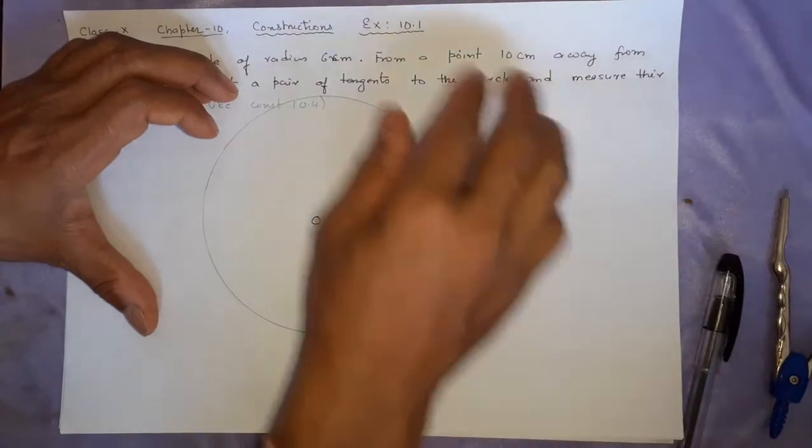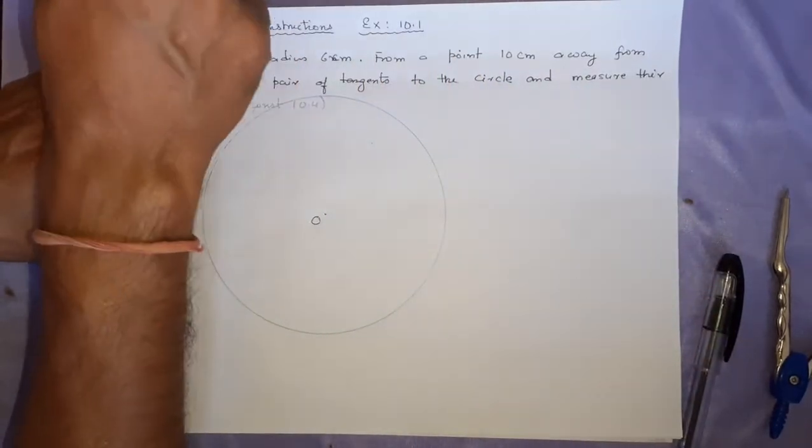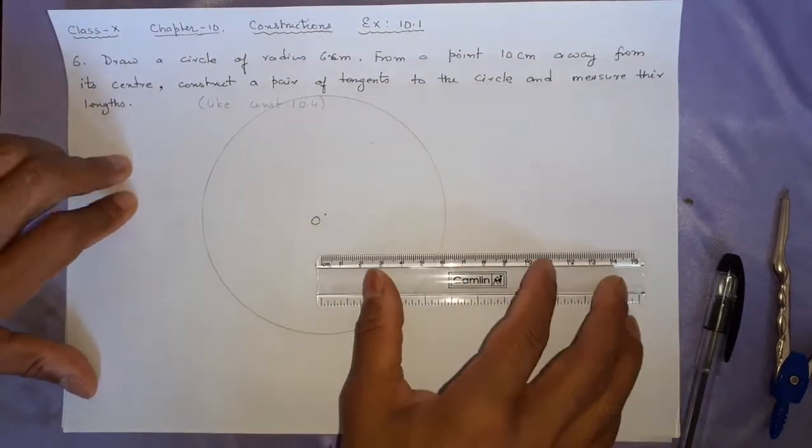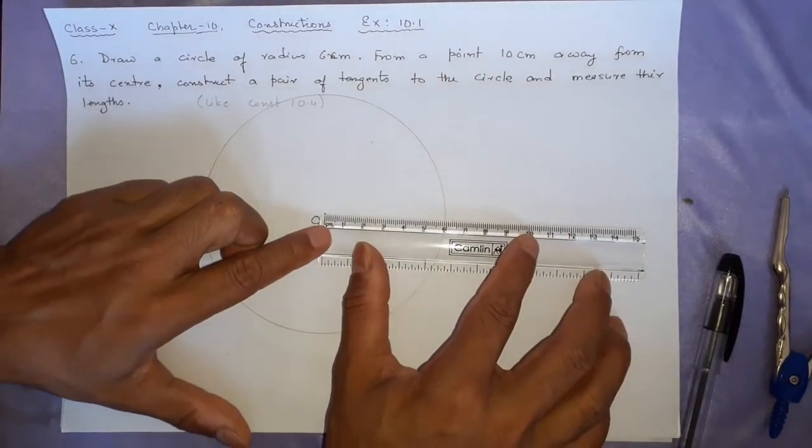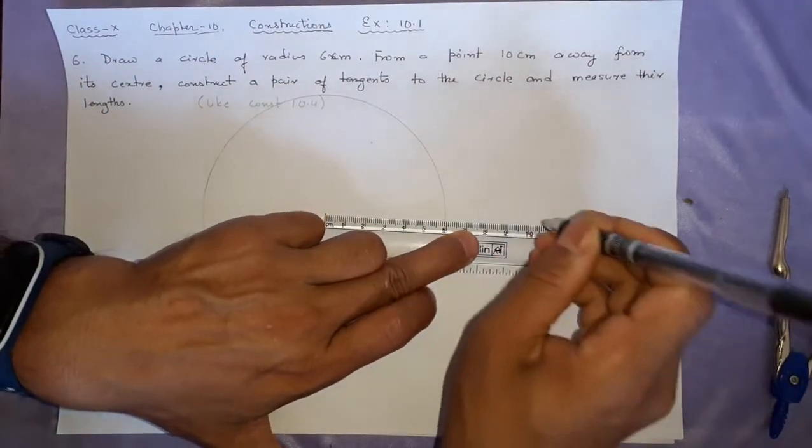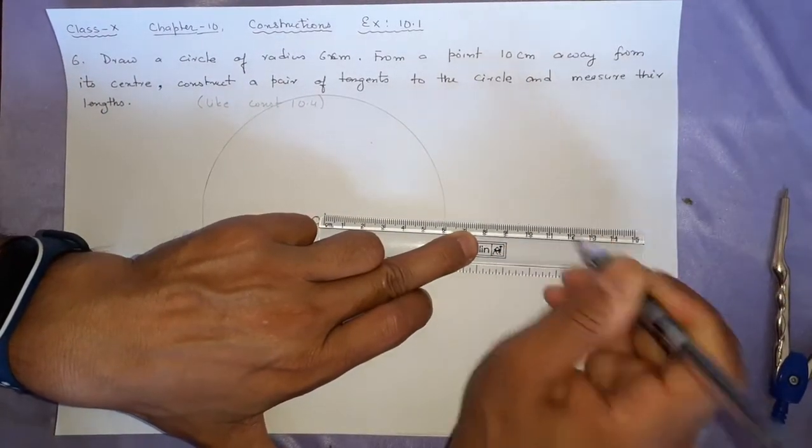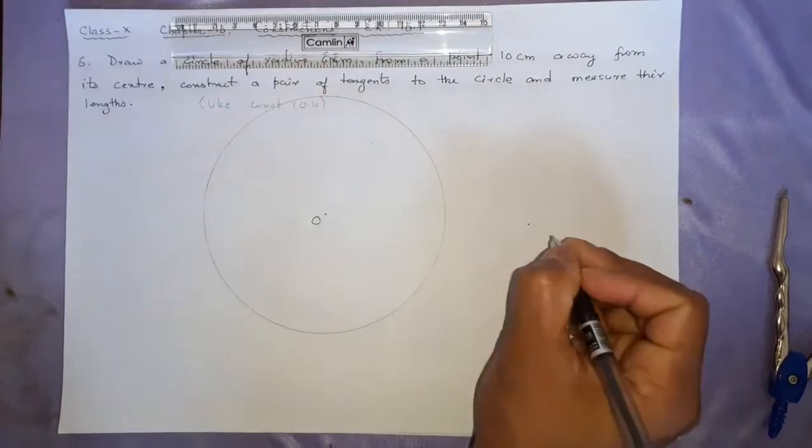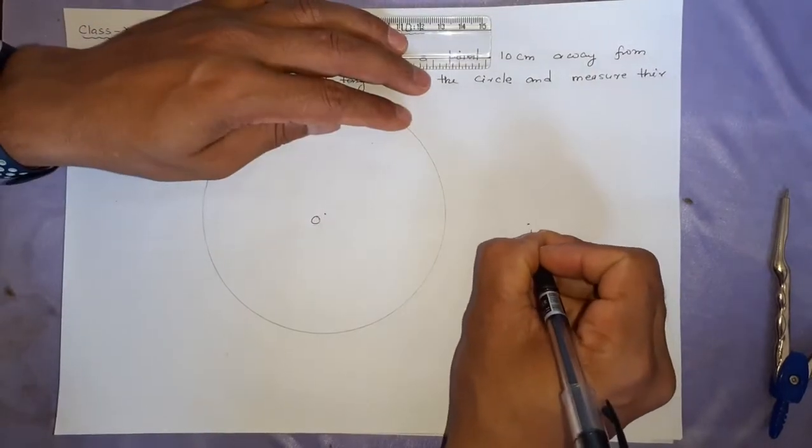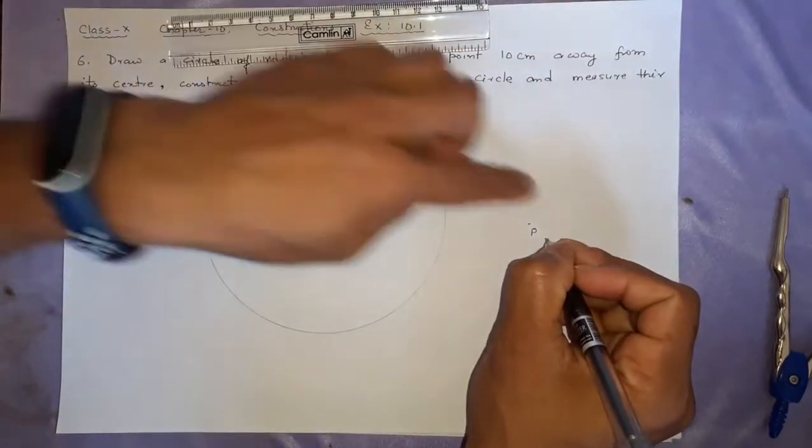Then from the center, you have to take some distance. How far is the distance? The distance is 10 cm away. So, this is O, and from here, we are going to 10 cm away. This is the 10 cm point. This point we will be calling it P, because from here, we need to make the tangent on this circle.